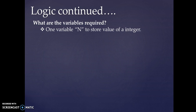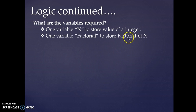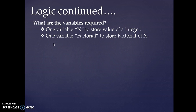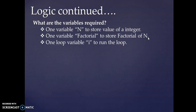What are the variables required for the program? One variable n is required to store the integer value entered by the user. Next, the variable factorial is used to store the factorial of the given number n. Another variable i serves as the loop variable.